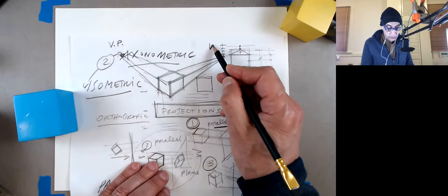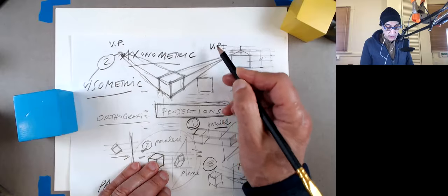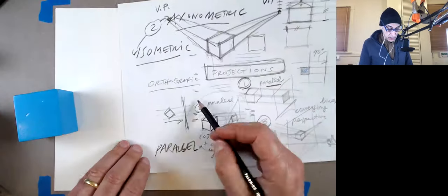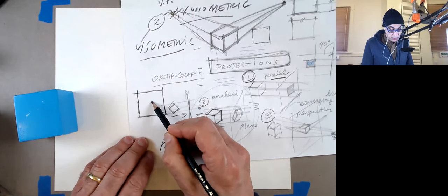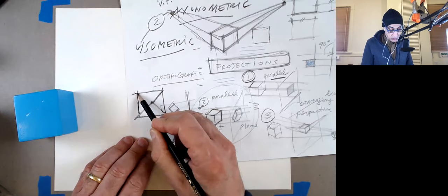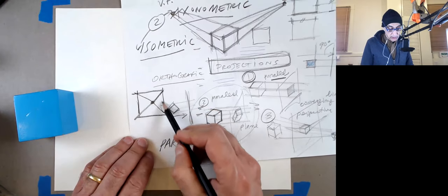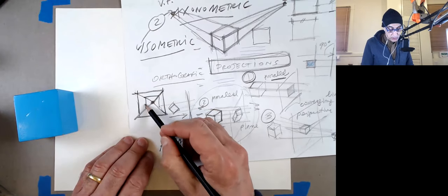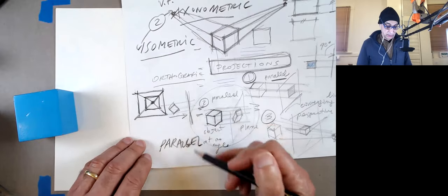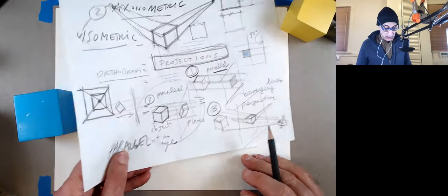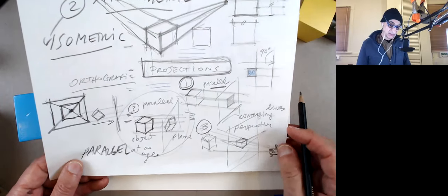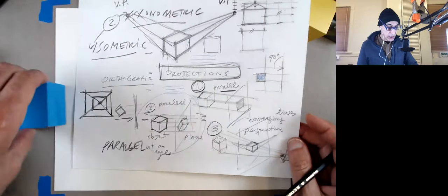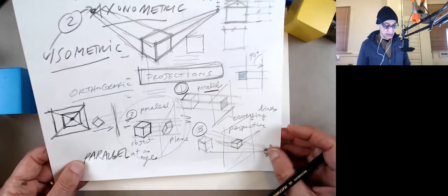You can also have a one-point perspective — just one vanishing point and all the other lines are parallel. So this may be an empty cube, for example. Those are the three kinds, and really there aren't any others. For our practical purposes in design, this is enough.